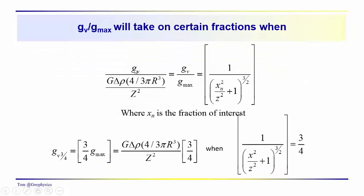Again, this is just the vertical component over gmax when its value is equal to three quarters or one half or one quarter or whatever you want it to be.